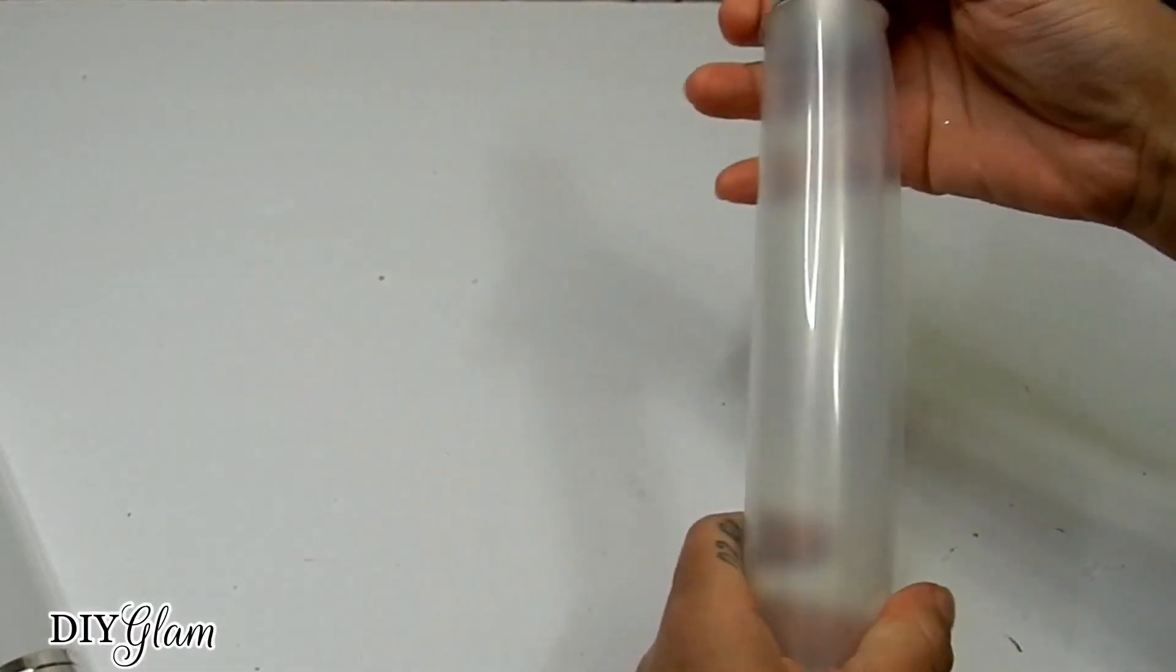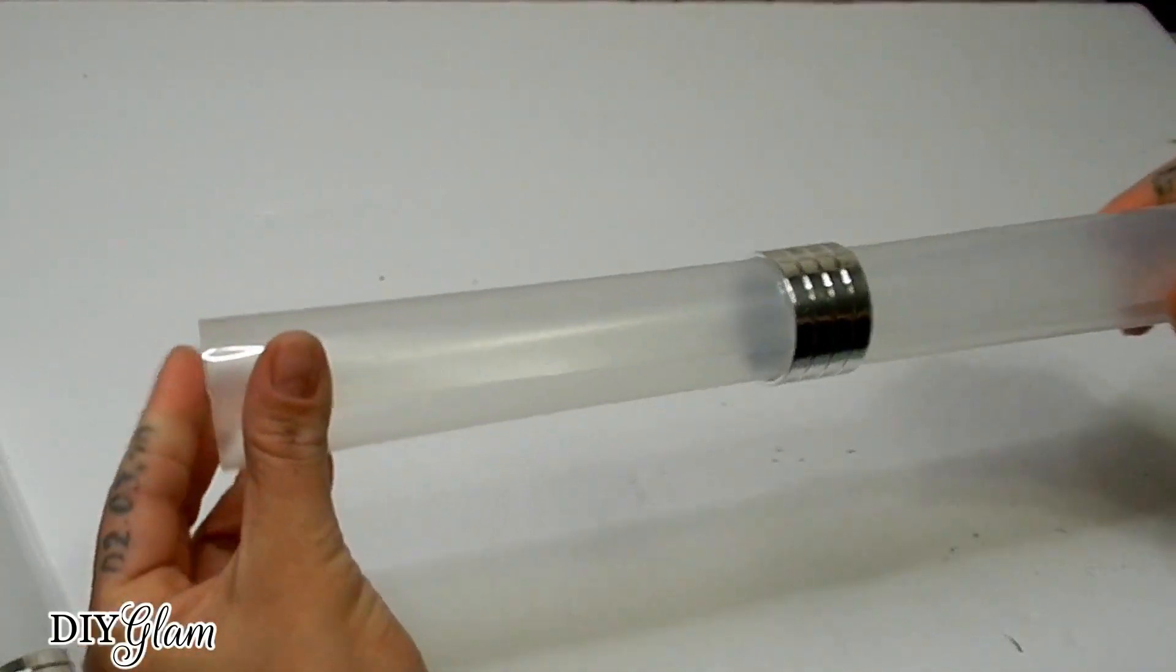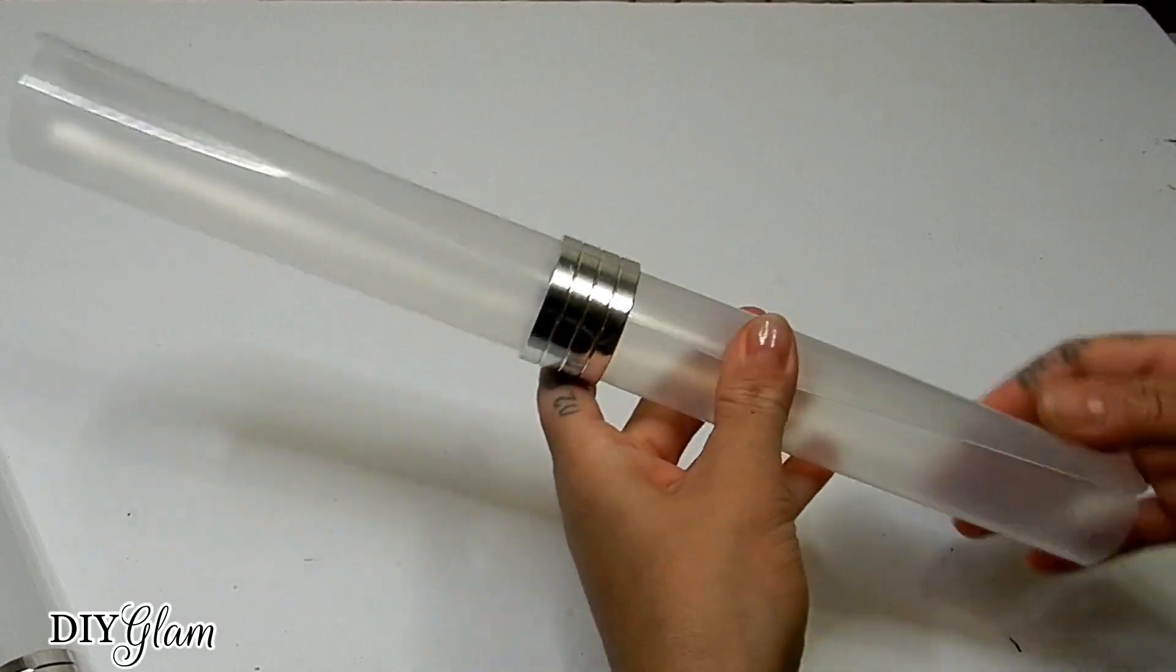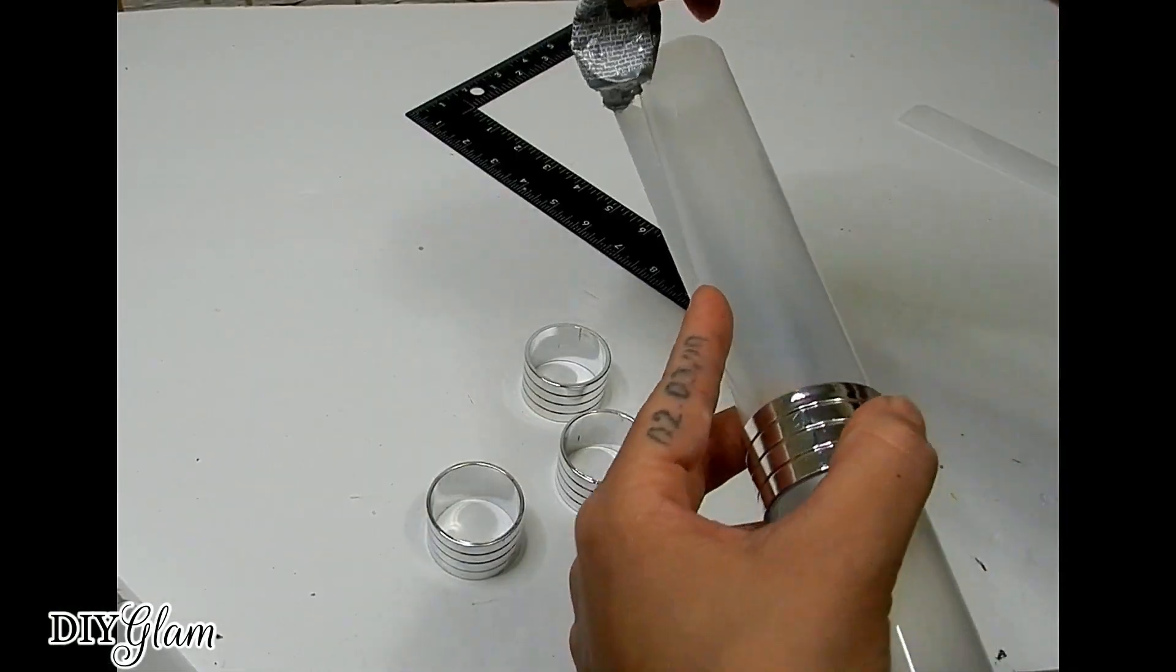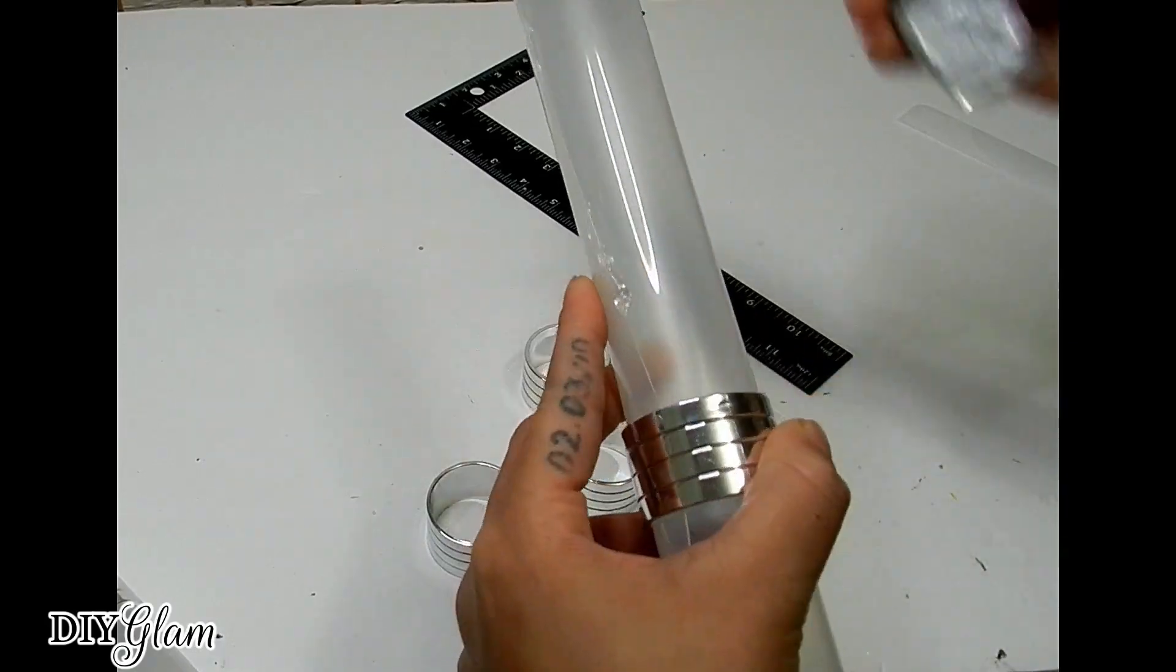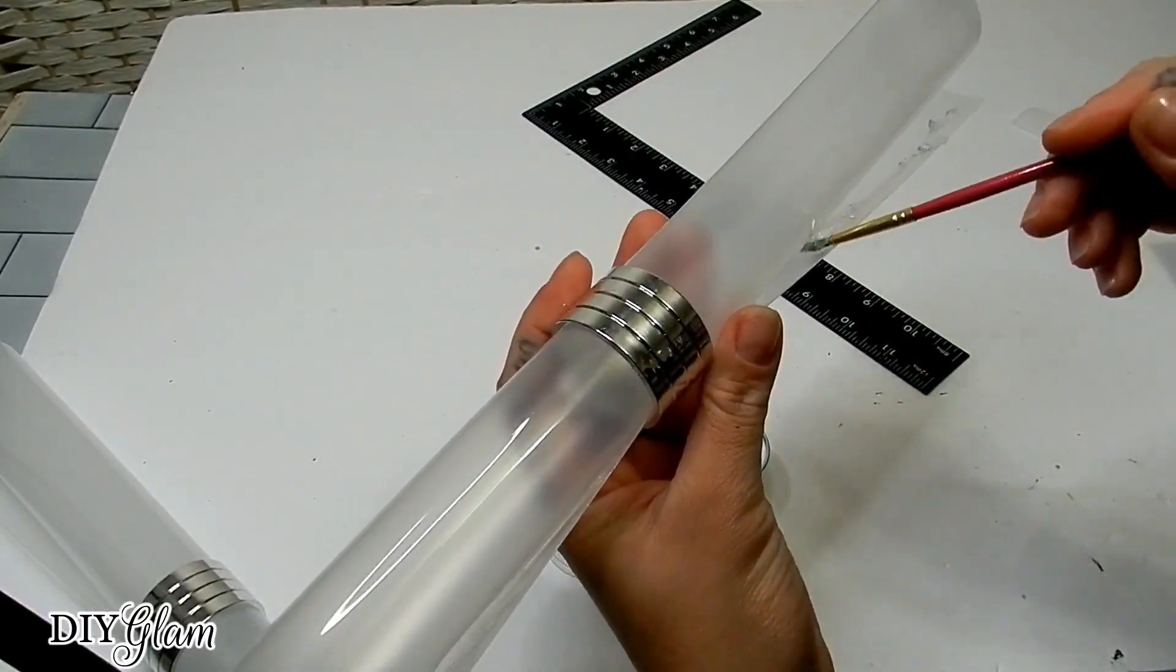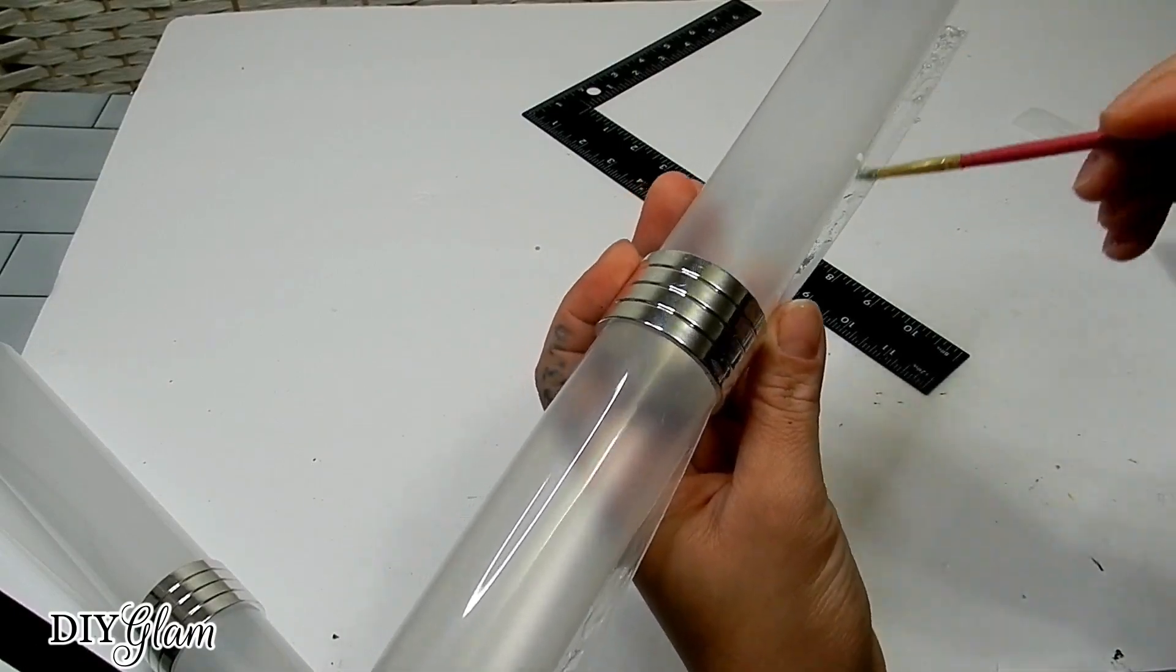So now I'm going to add that napkin ring back. This is going to help me keep the form of the light. So I'm going to be taking my E6000 and I'm going to be adding this to the opening here, and I'm going to be using one of these paint brushes just to smooth that glue out and spread it.